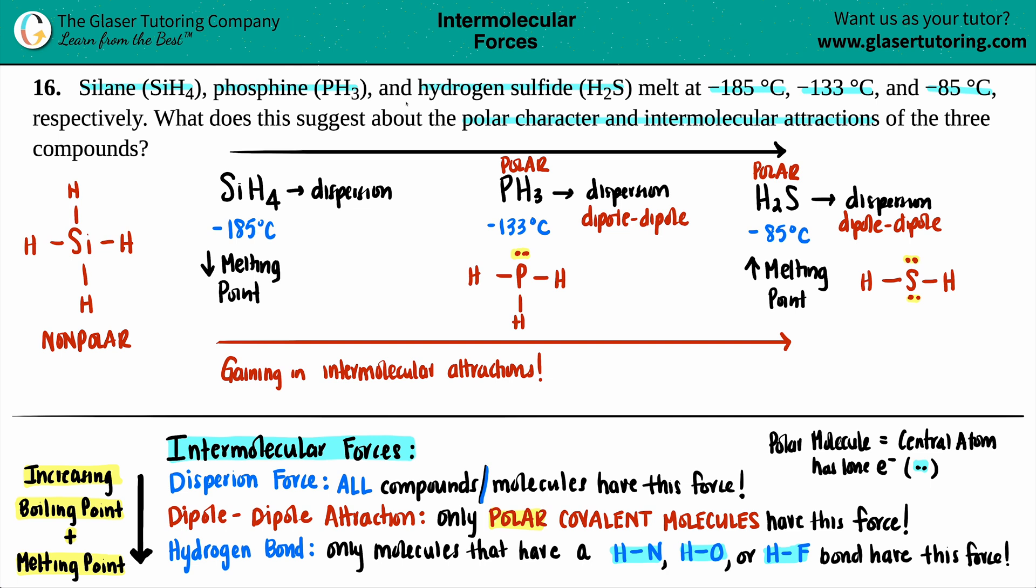It can give us a hint as to why SiH4 has the lowest melting point because it only has dispersion. The other two have more intermolecular forces, therefore making them have a higher melting point.